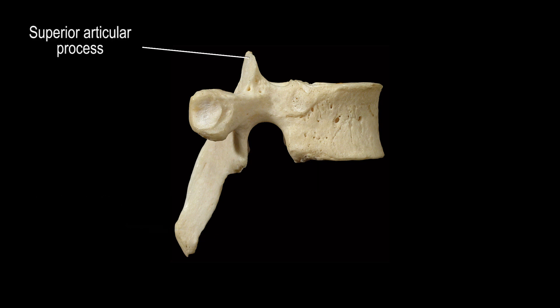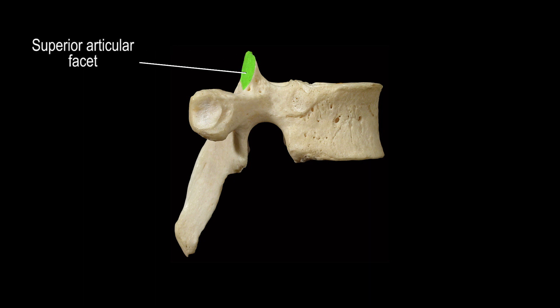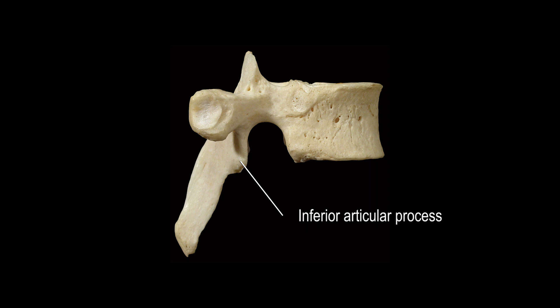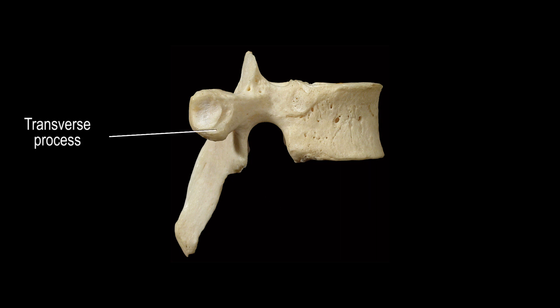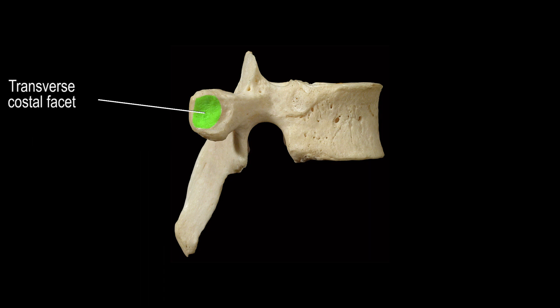This is the superior articular process, and on it we can see the smooth, flat bone described as the superior articular facet. Down here we can see the inferior articular process. This is the right side transverse process. This is the transverse costal facet.